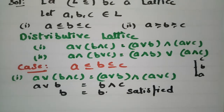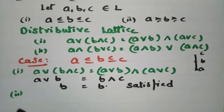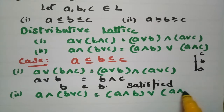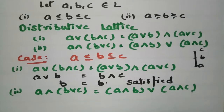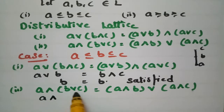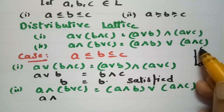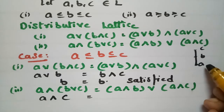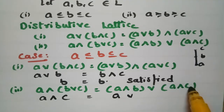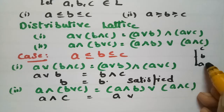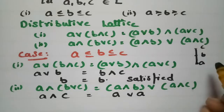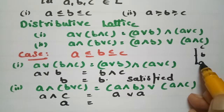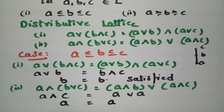For the second distributive property in Case 1: A ∧ (B ∨ C) = (A ∧ B) ∨ (A ∧ C). From the Hasse diagram, B ∨ C: join is the least upper bound, so among B and C, C is the upper bound, giving B ∨ C = C. Then A ∧ C: among A and C, A is the greatest lower bound, so A ∧ C = A. For A ∧ B: among A and B, A is the lower bound, so A ∧ B = A. Then (A ∧ B) ∨ (A ∧ C) = A ∨ A = A. So A = A — the second condition is satisfied.